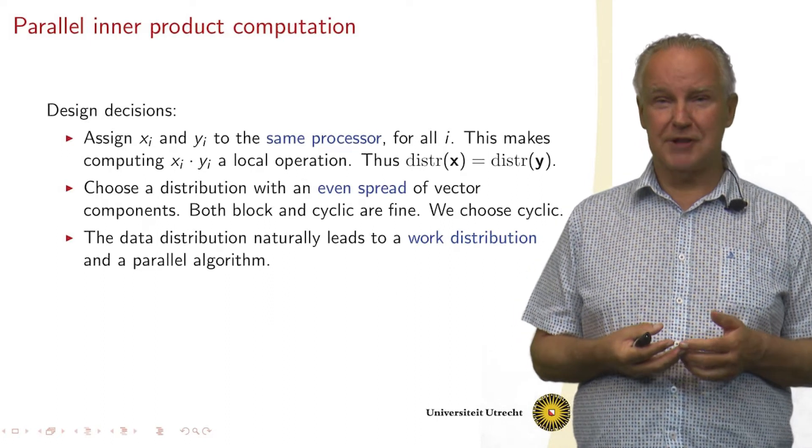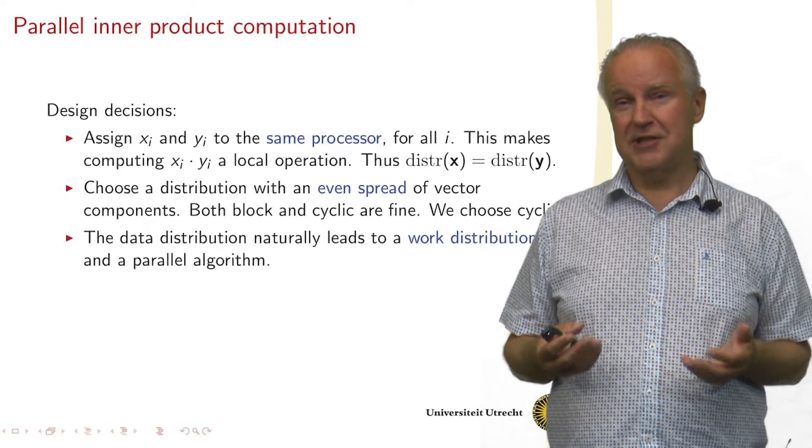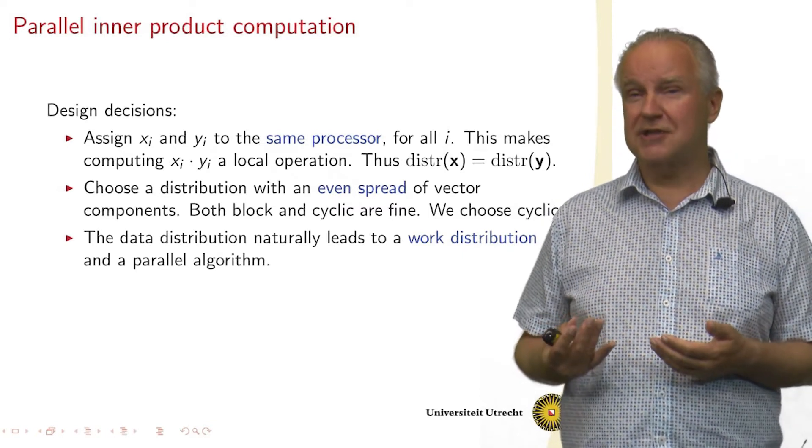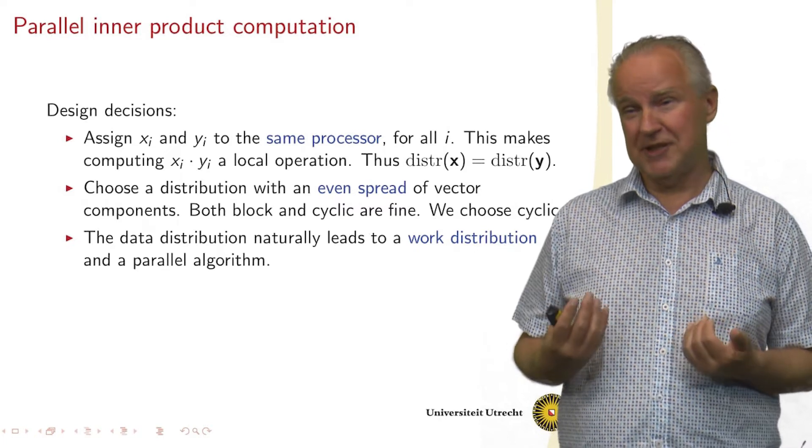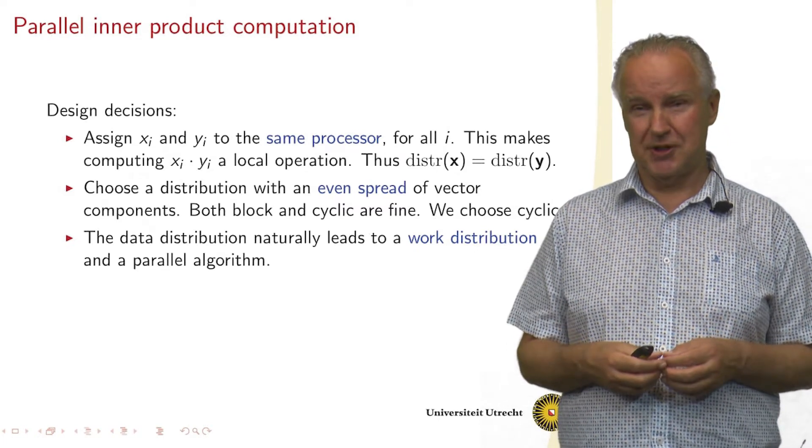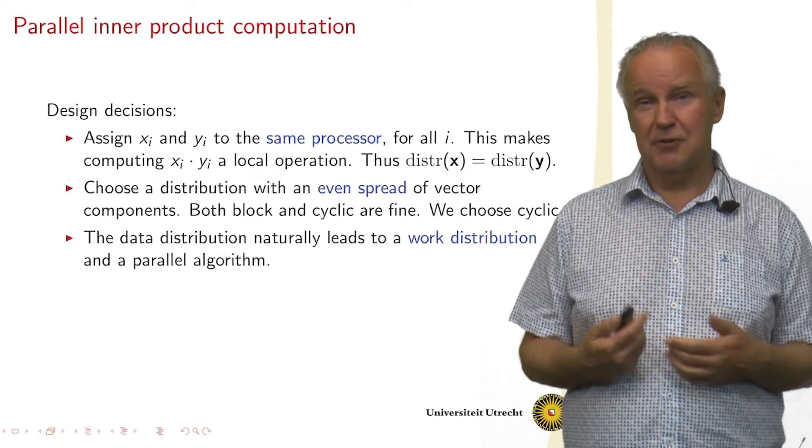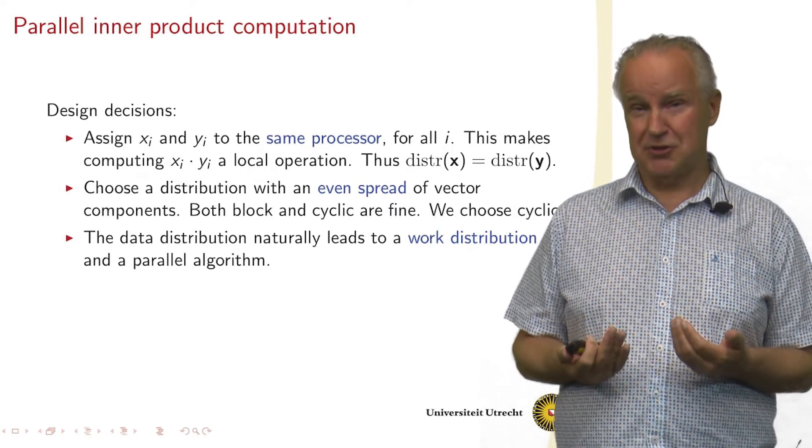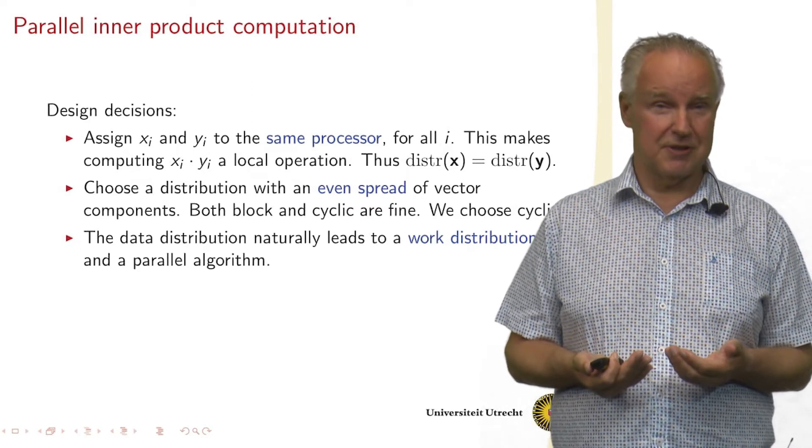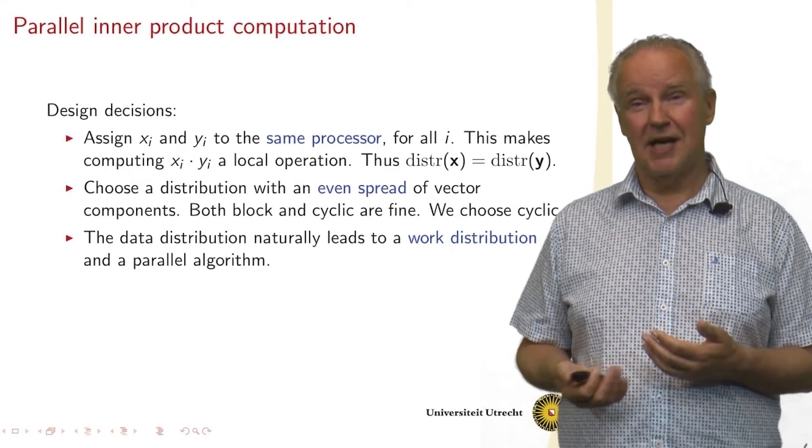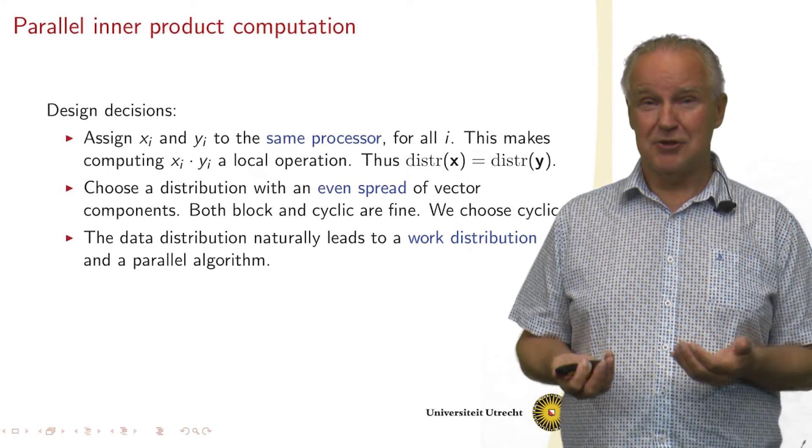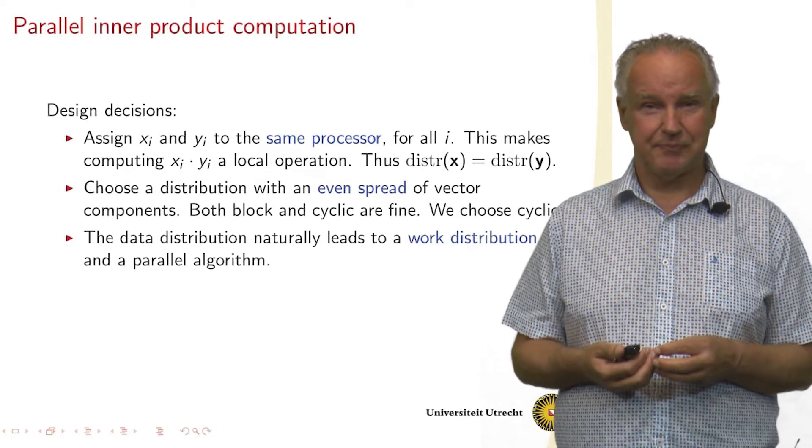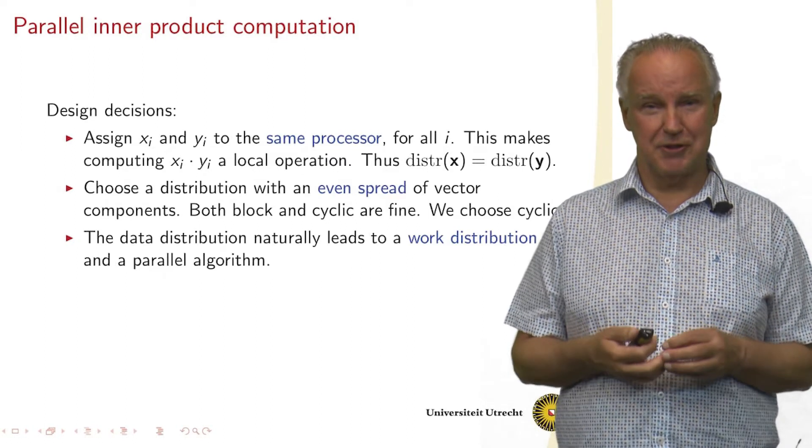So first we have to decide something on the distribution, because if we have a data distribution, the work distribution follows automatically. So we need to have a good data distribution. We need to distribute x, we need to distribute y. Now it makes sense to take the same distribution for both vectors, because then xi and yi are on the same processor, so their product can be computed by a local multiplication. So that's the first choice we make.